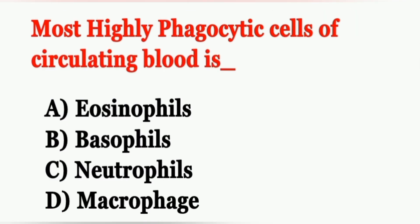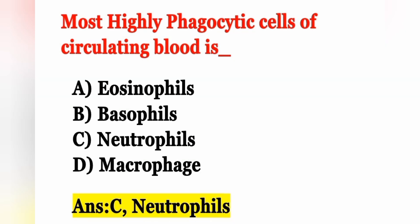Next question: The most highly phagocytic cells of circulating blood is — Option A: eosinophils, Option B: basophils, Option C: neutrophils, Option D: macrophage. The most highly phagocytic cells of circulating blood are neutrophils. Option C is the correct answer.